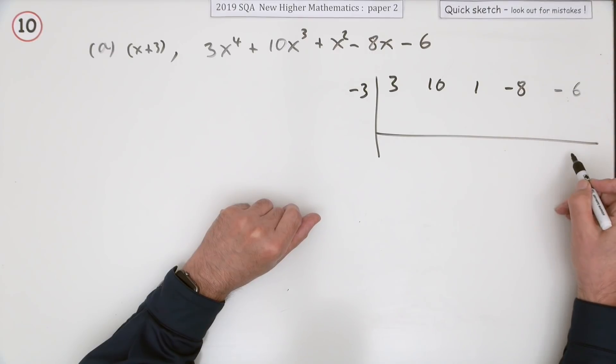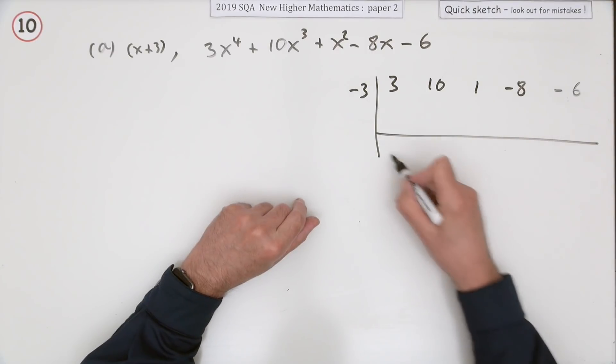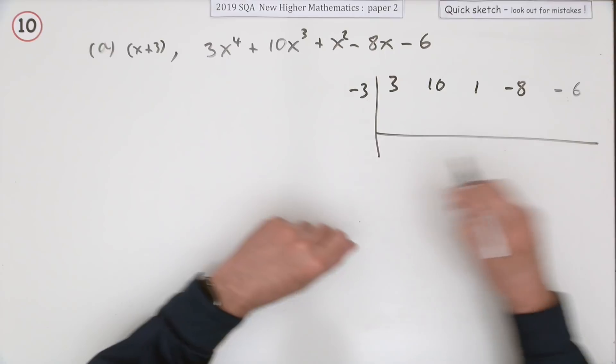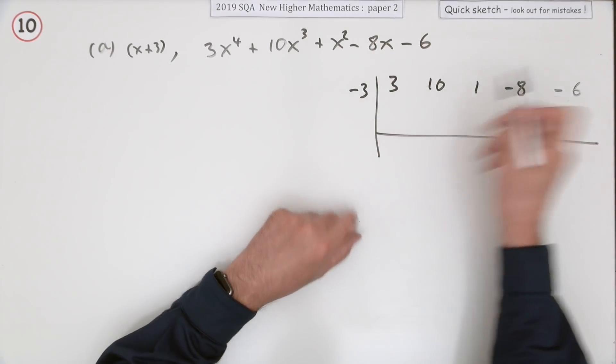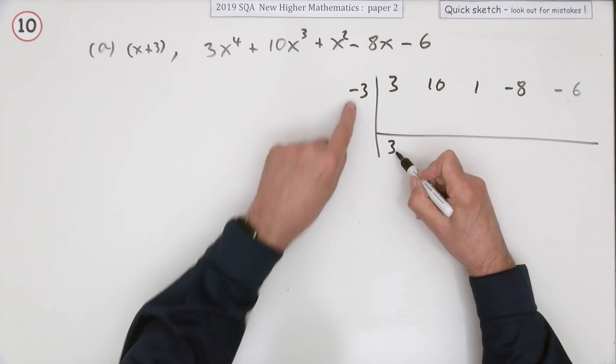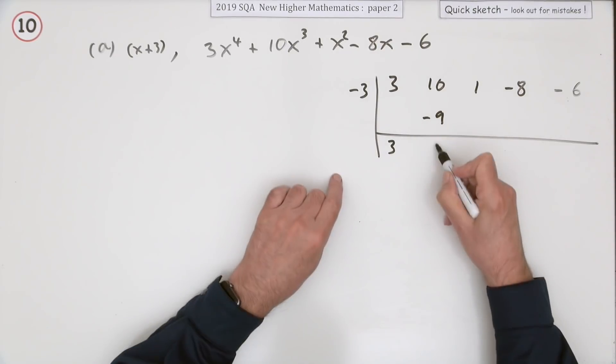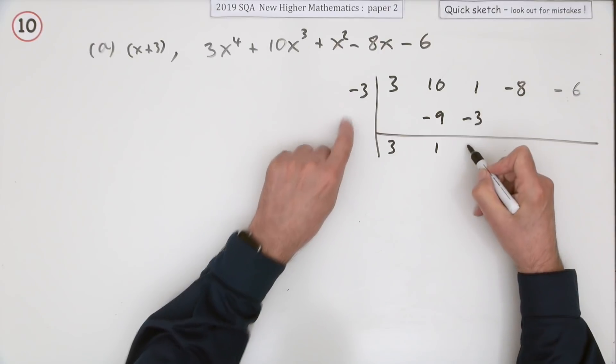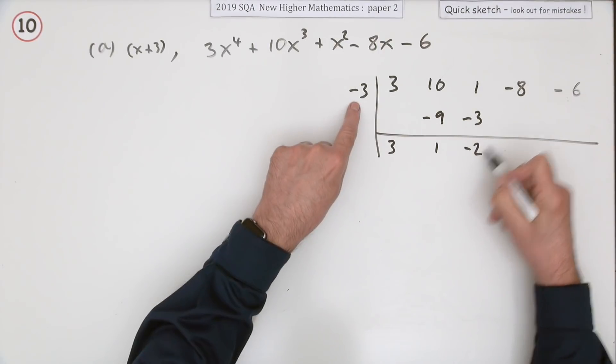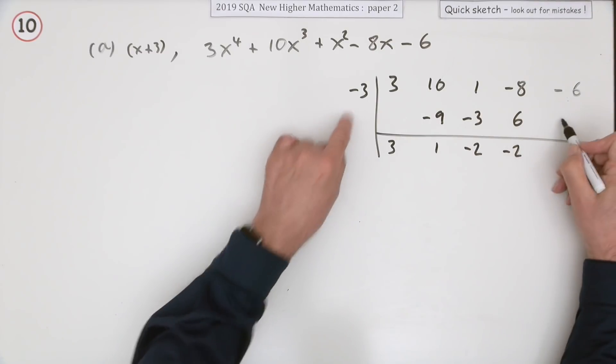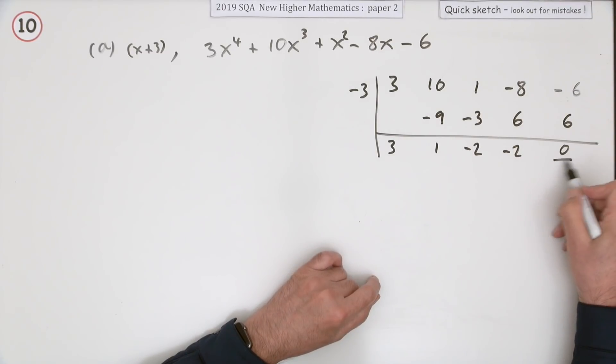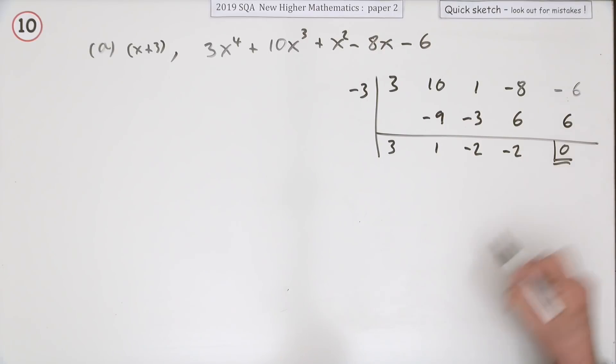So proceed: bring down the 3, multiply it up, add it down, multiply it up, add it down. Multiplies up to 6, add it down, that's a -2. Multiplies up to a positive 6, and there you go, it comes to 0. Sometimes you box it off just to keep it away from the rest of them.